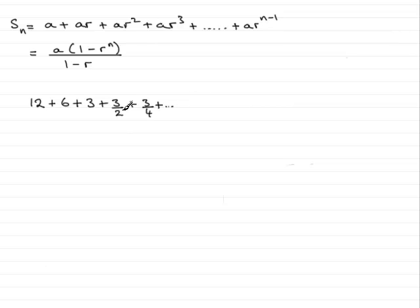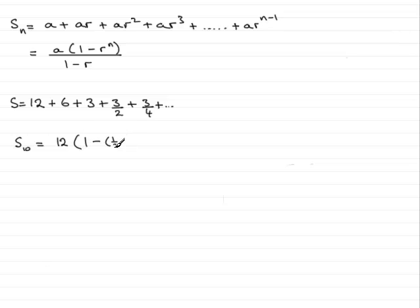And if we were to add these up — let's say we've got S, the sum of these terms, just generally — let's have a look at what happens if we were to sum the first 10 terms. S10 would be 12 multiplied by 1 minus the common ratio, a half, to the power 10, all divided by 1 minus the common ratio, 1 minus a half.